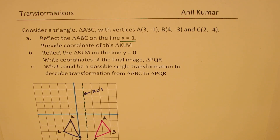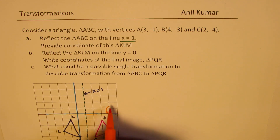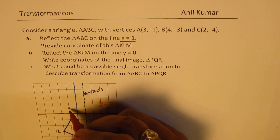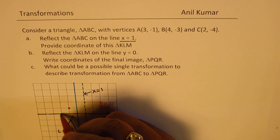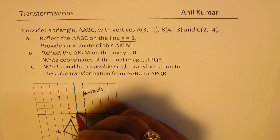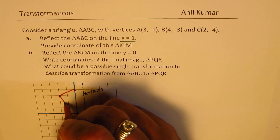Now this triangle KLM has to be reflected on y equals 0. What is y equals 0? y equals 0 is actually the equation of the x-axis, so it is this line on which we have to reflect. That is a very important thing to understand. When you reflect KLM over the x-axis, it becomes much simpler once you plot it on a graph. This question could be a multiple choice question without a graph, and then it becomes really, really difficult.